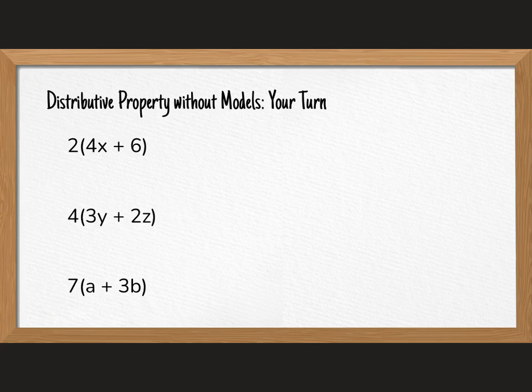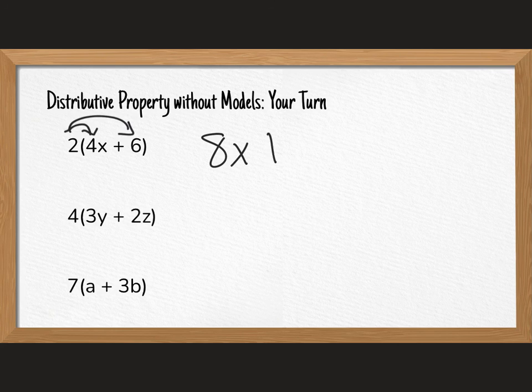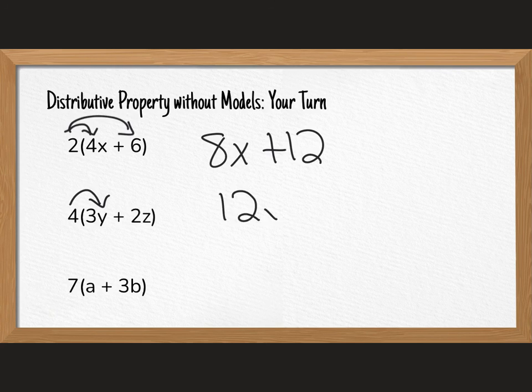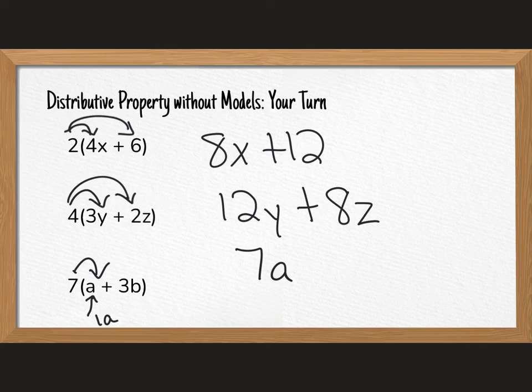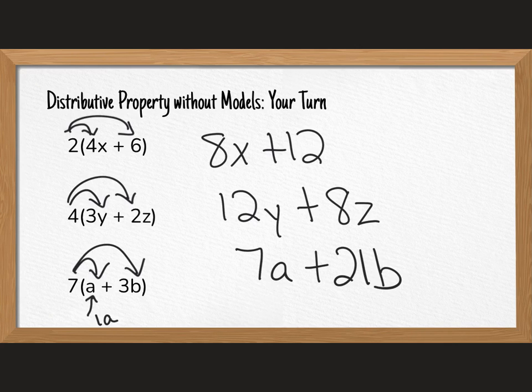Welcome back. Let's check our answers. So hopefully you did two groups of 4x, which is 8x, and then two groups of six, which is 12. And then next you did four groups of 3y, which is 12y, plus four groups of 2z, which is 8z. And then here's that tricky one. We have to remember that means 1a. So seven groups of a is 7a. And then seven groups of 3b would be 21b. And that's it.